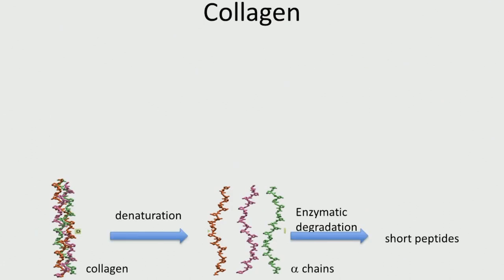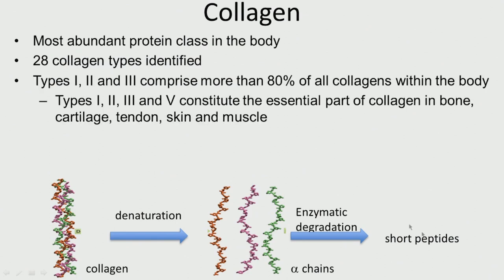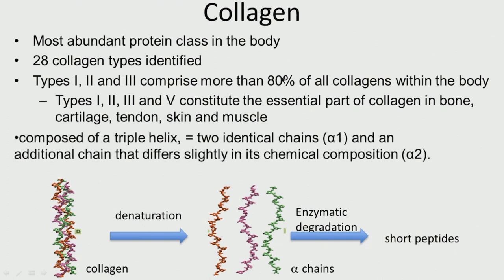In the previous class we talked about collagen, which is the most abundantly found protein in the body. It has a triple helix structure — two alpha-1 chains and one slightly different alpha-2 chain. It can become denatured, get separated, and if there is an enzyme, it can be degraded into smaller peptides. There are 28 collagen types; types 1, 2, and 3 comprise 80% of all collagen in the body. It is found in bone, cartilage, tendon, skin, and muscles.